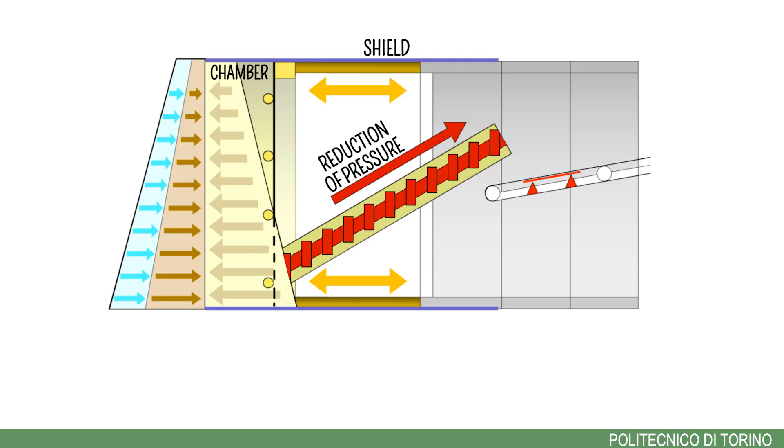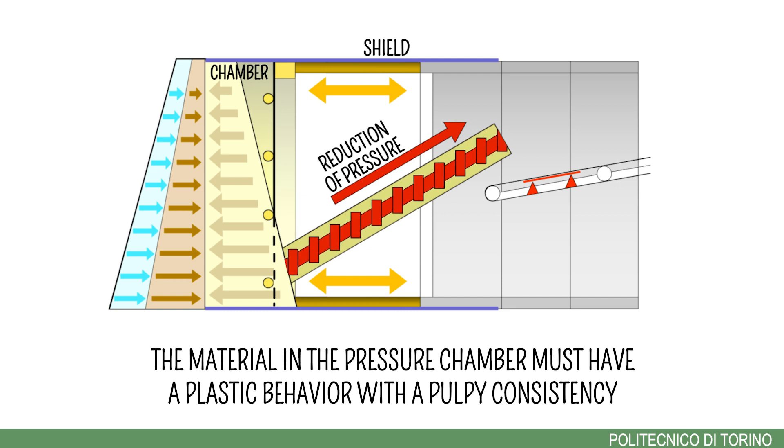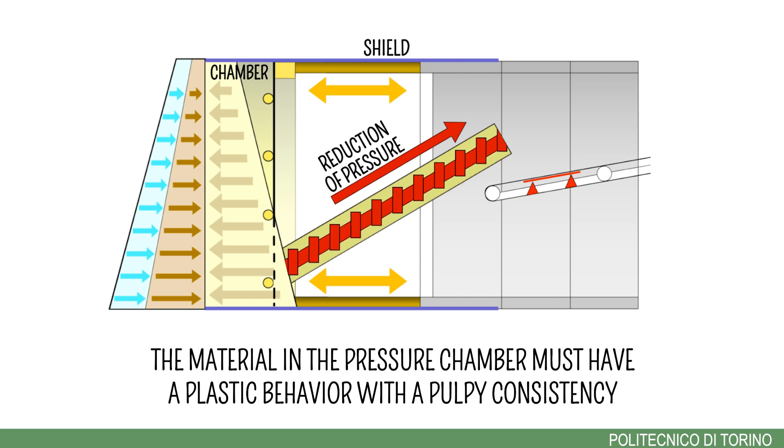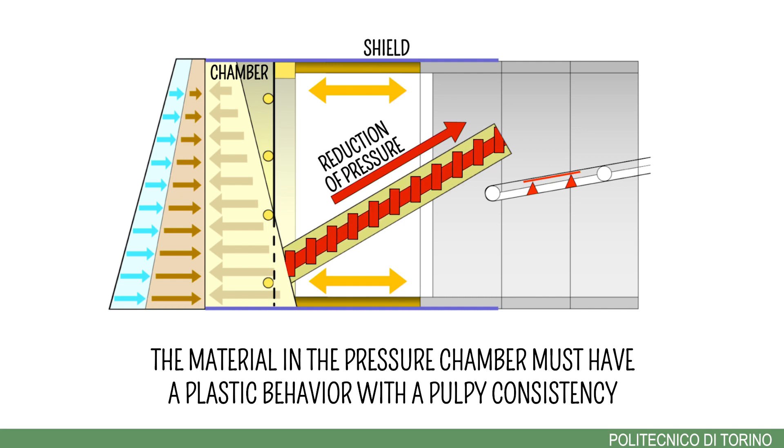To correctly manage the excavation process, the soil in the pressure chamber must have a plastic behavior with a pulpy consistency. This is obtained with soil conditioning, that is to say by adding chemical products that are able to interact with the soil grains and change the soil properties.